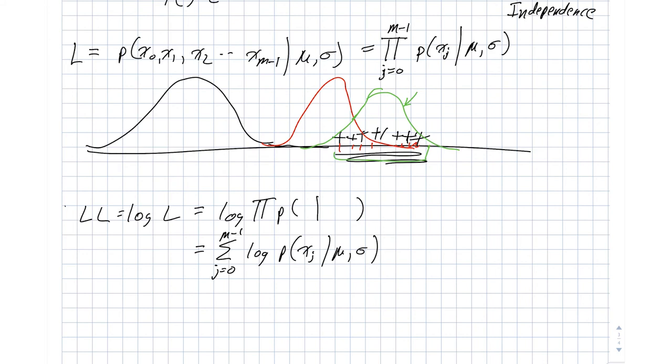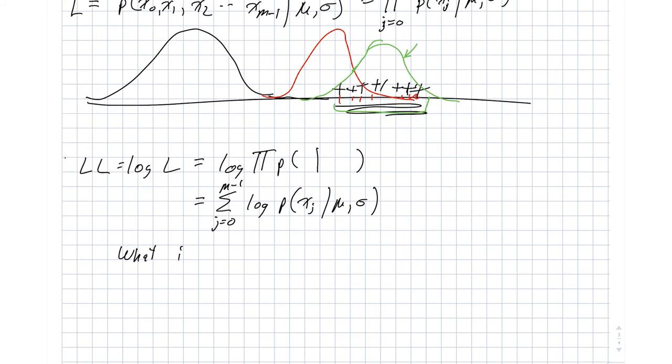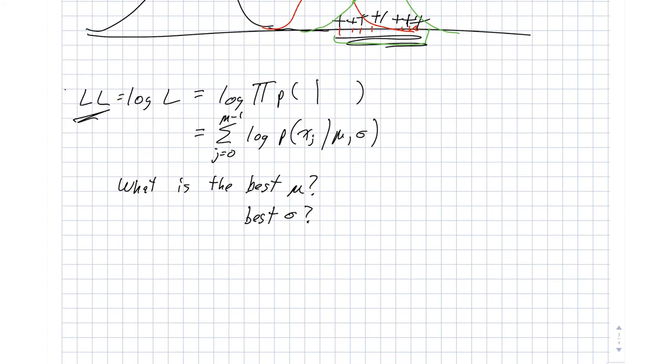And now that we have this log likelihood function, from a statistics perspective, we can ask the question of what is the best mu? What is the best mean? And what is the best sigma? And what we mean by best is what is the choice for mu and sigma that maximizes this log likelihood?